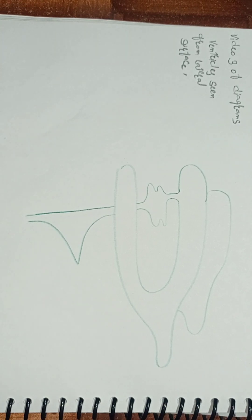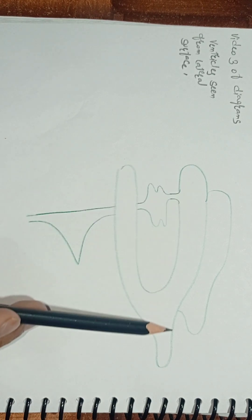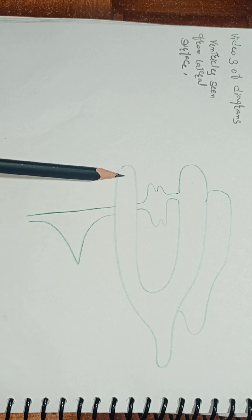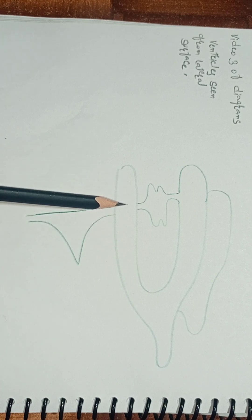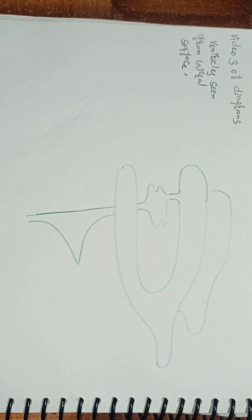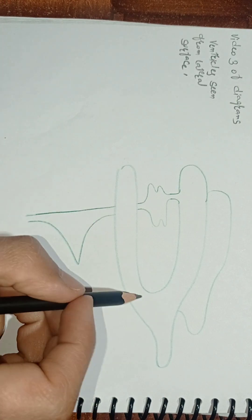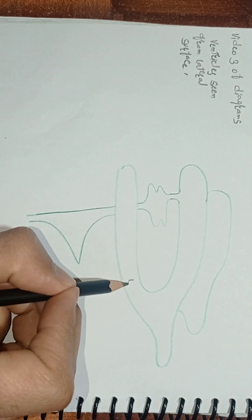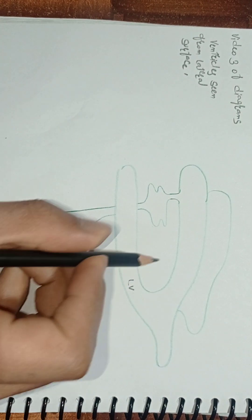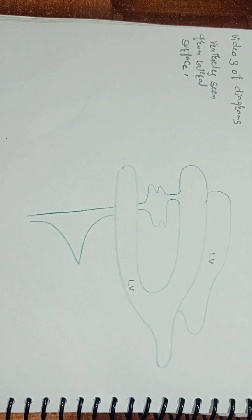In our brain we have two lateral ventricles. We have a total number of four ventricles. This C-shaped structure is a lateral ventricle. It is located in the cerebral hemisphere, so we have two lateral ventricles present in the two cerebral hemispheres. This is the lateral ventricle, and this is also the lateral ventricle.